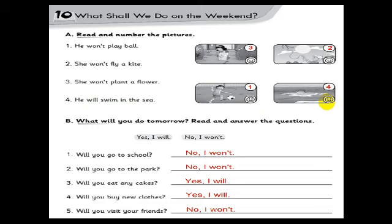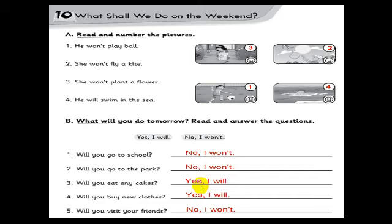Now let's move to Exercise B: What will you do tomorrow? I'm going to ask you questions and you answer using 'Yes, I will' if you will do something, or 'No, I won't' if you will not. For example: Will you go to school? - No, I won't. Will you go to the park? - Yes, I will / No, I won't. Will you eat any cakes? You have to write your own answer according to what you will or won't do.